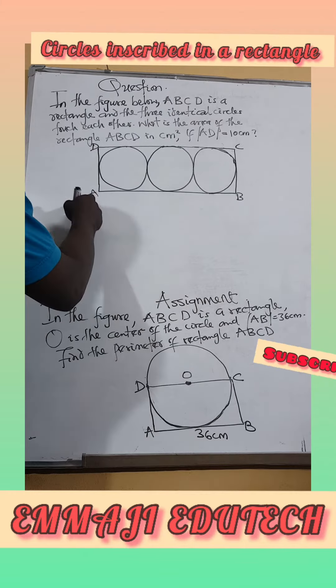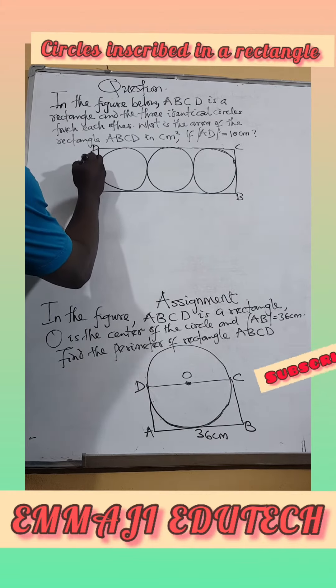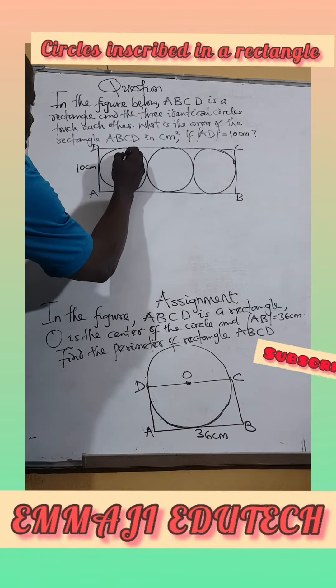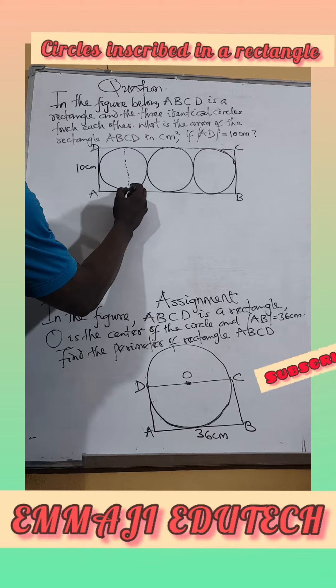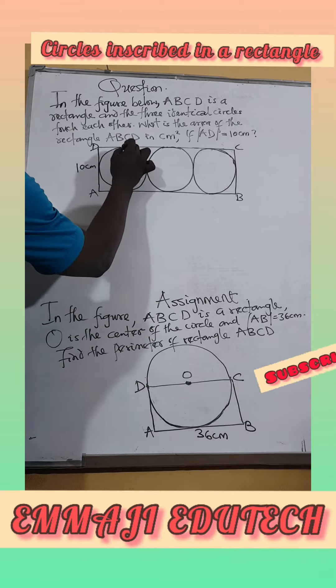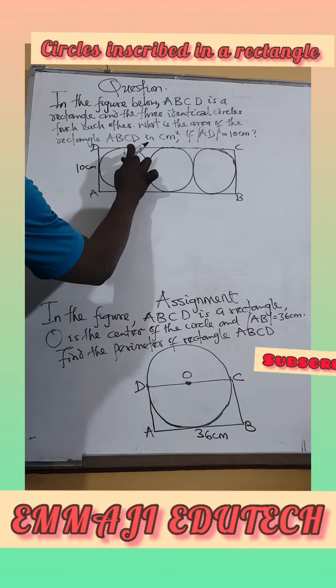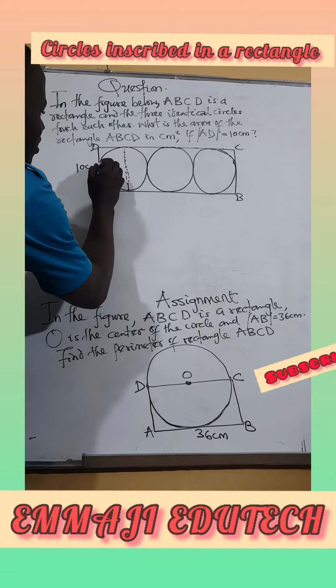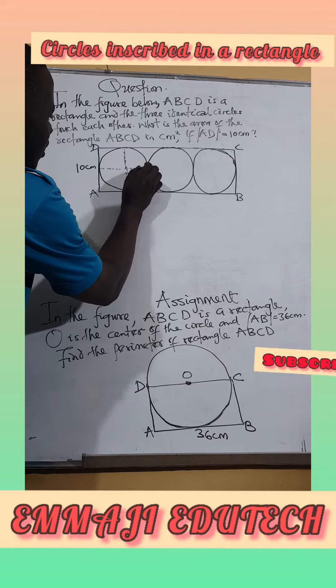Now where is AD? This line AD, we are told is 10cm. Do you remember that from here to here is equal to this and this line now is the diameter of this circle which means that this line is equal to this line.